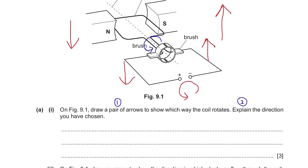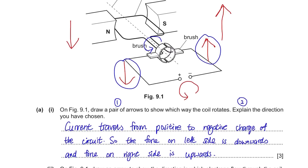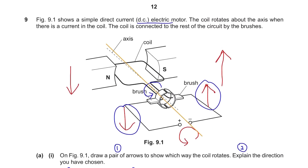To explain: current flows from the positive to the negative side of the circuit. For the left side, current travels towards the magnet. For the right side, current travels towards the circuit. So the force on the left is going downwards and the force on the right is going upwards — giving anti-clockwise rotation. To solve this kind of question: divide the diagram in half, look at left then right sides since current direction differs, then deduce the rotation from the two forces.